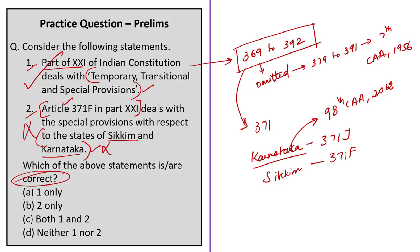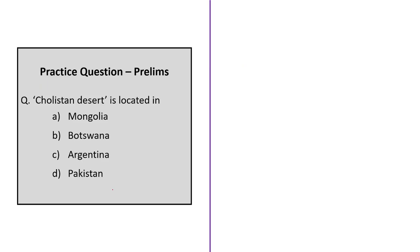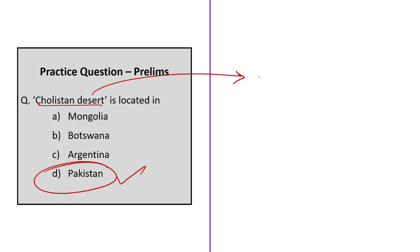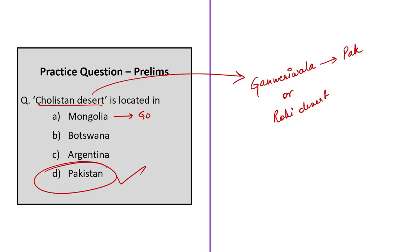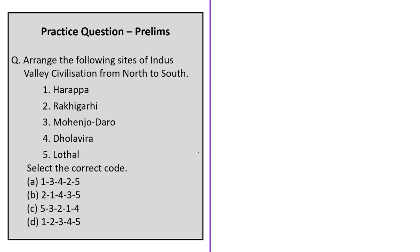The second question asks where the Cholistan Desert is located — it is located in Pakistan. This is important because one of the major urban centers of the IVC, Ganweriwala, is located in the Cholistan Desert region of Pakistan. This desert is also called the Rohi Desert. Other options — Mongolia (Gobi Desert), Botswana (Kalahari Desert, in southern Africa), and Argentina (Patagonia Desert) — are all incorrect.